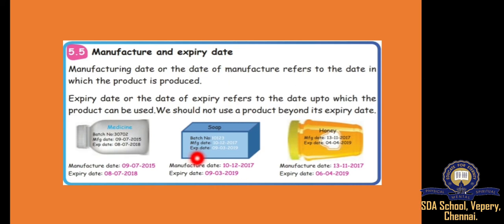The back side will have manufacture date — MFG date and EXP date like this. You have to check the EXP date as well as manufacture date before buying any product. Because some people will sell expired products — already that expiry date will be finished for the products. They will be selling it, which is very harmful for us. So we should not use the products after expiry date. After expiry date, the product is expired — expired means dead. We should not use the product after the death date.